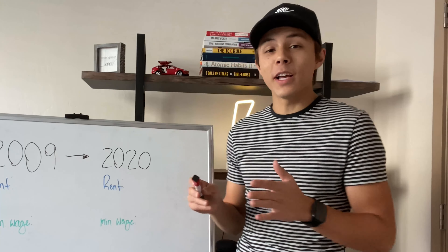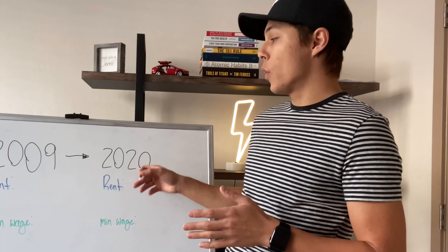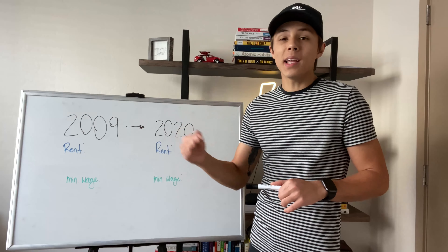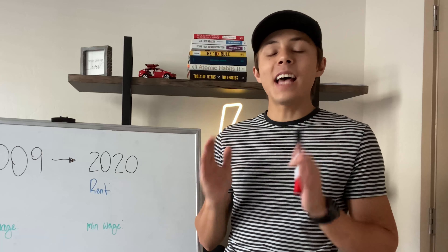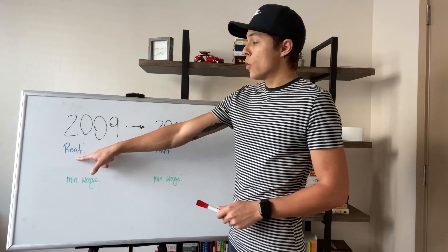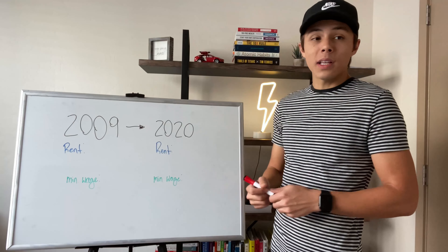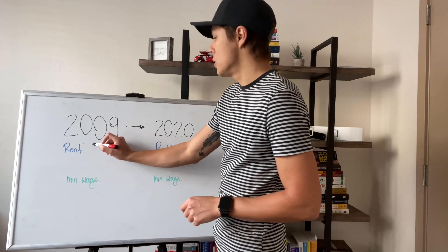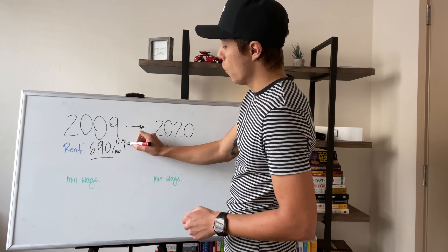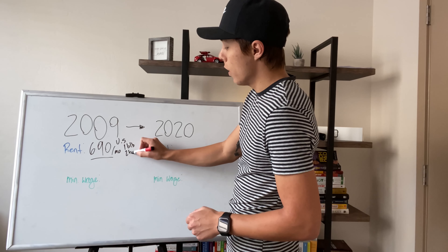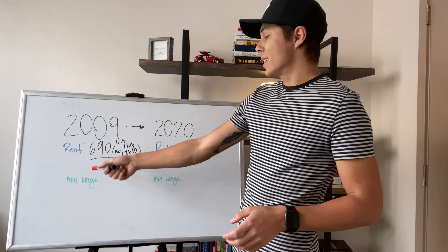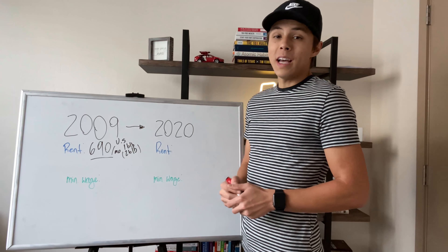Now we're going to talk about what inflation means for your money from 2009 to 2020, based on rent and minimum wage, and this will explain what's happening. If you stay tuned to the end of the video, I'm going to show you exactly how to beat this problem. So for rent, we're going to look at 2009 to 2020. The starting figure for rent is $690 per month — this could be a one bed, one bath, or a two bed, one bath in a more suburban area.